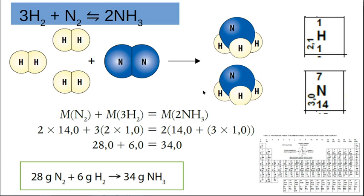What's in an ammonia? Ammonia is a nitrogen plus three hydrogens. From the periodic table, nitrogen weighs 14, bonded to three hydrogens so three times one is three. So 14 plus three is 17 — this ammonia molecule weighs 17, but I've got two ammonia molecules. So two times 17 is 34. So 28 plus six is 34, which equals 34. Left-hand side equals right-hand side — 28 grams of nitrogen and six grams of hydrogen gives 34 grams of ammonia.